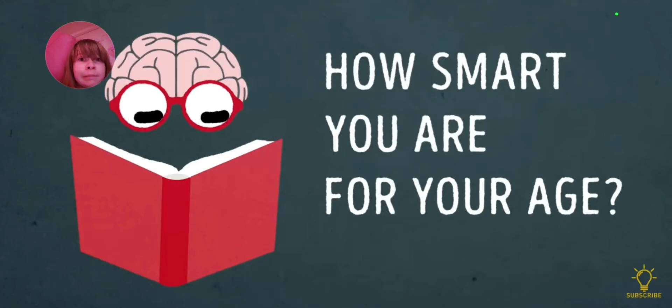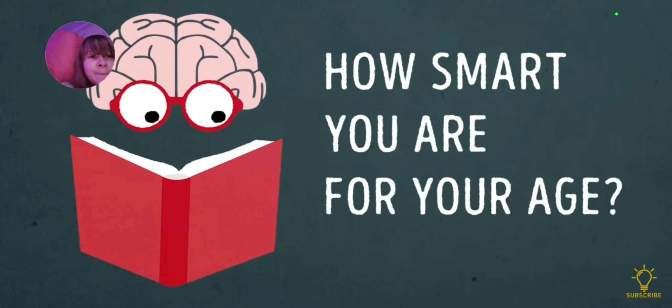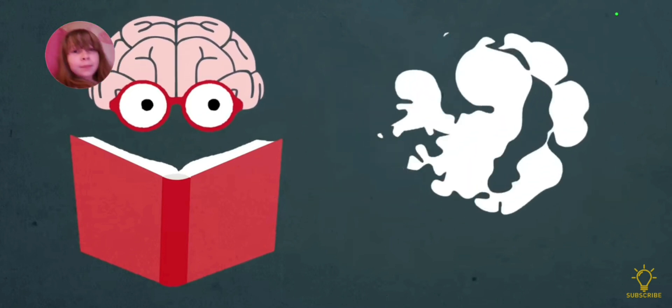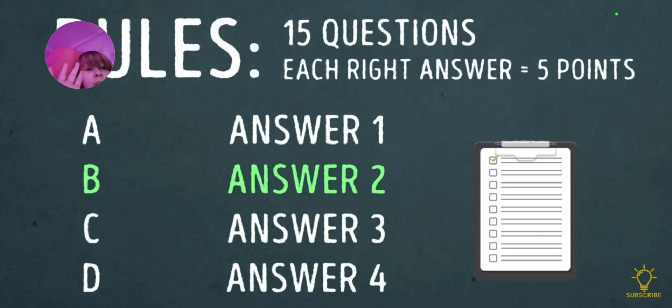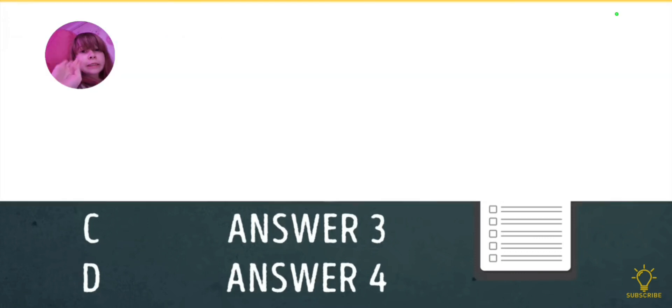How smart are you for your age? Have you ever wondered how smart you are for your age? Brightside will give you a great chance to find this out. Here are the rules. You will need to answer 15 questions and you will get 5 points for each right answer. Count the points because you will need them to interpret the results at the end of the video. Let's start.